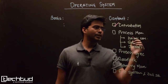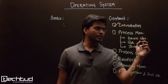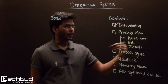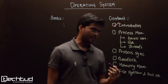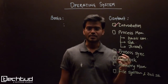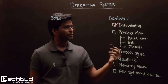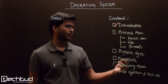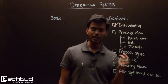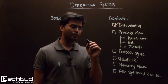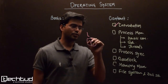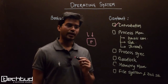Following that we will be covering process management. When a program is executing, that executing program is called a process. In a multi-process system we have multiple processes executing together, which gives us an illusion of parallelism.